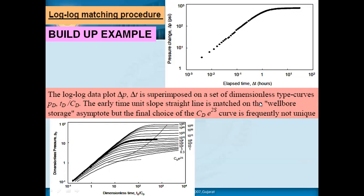You are moving out from wellbore storage and getting your skin, so the graph must be properly matched. The early-time unit-slope straight line is matched on the wellbore storage asymptote, but the final choice of the C_D curve is frequently not unique. This part may match the unit slope at early time, but this other part — related to the skin — may not match. You need to shift your graph so it matches both the unit-slope part and the skin part.